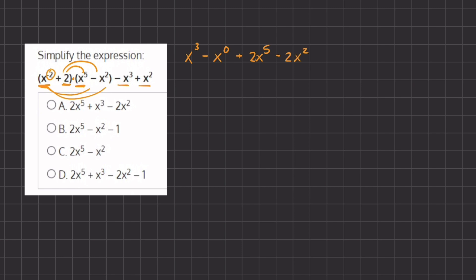And now we can add our two terms outside of our parentheses, which is negative x to the third plus x squared.